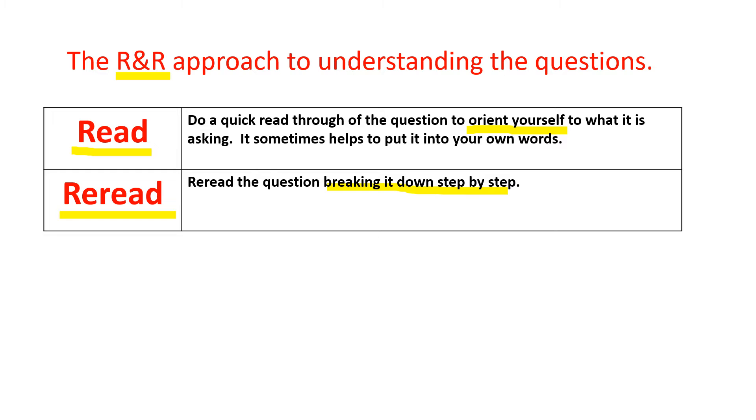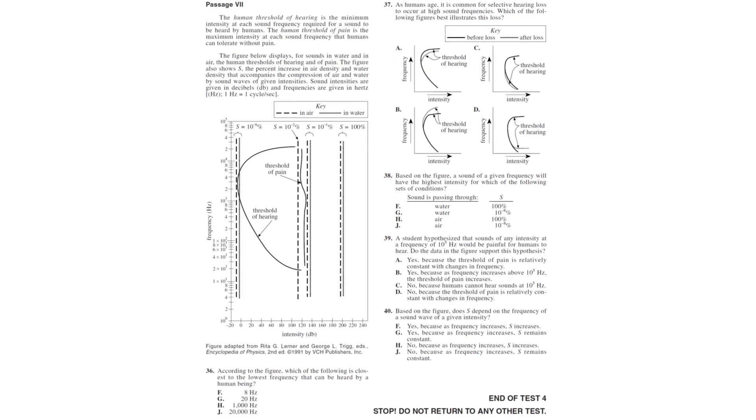Then you reread, you're really breaking it down step by step. I'm going to be doing the reread part. Hopefully you've already read it and we're rereading. If you haven't read it before we start, pause the video and read it. For data passages, they're just going to have data, not study one or study two. In this one we want to look at the chart which shows frequency with a key in air and water. It's kind of a confusing chart here with intensity. You want to get to the questions as quickly as possible.